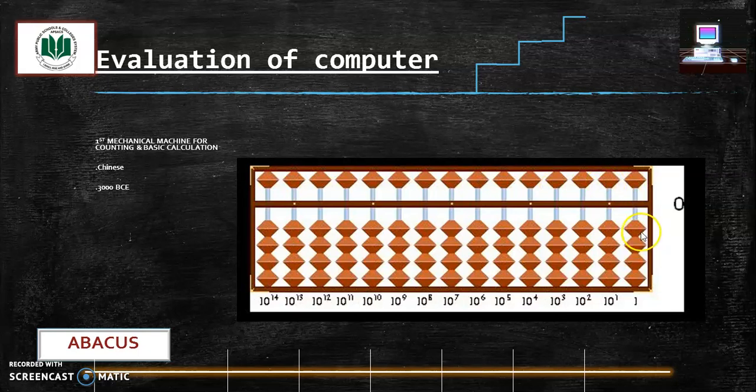This first column is able to read nine numbers, zero to nine units. This is tens, hundreds, thousands and so on. Let's check it out how abacus operates.